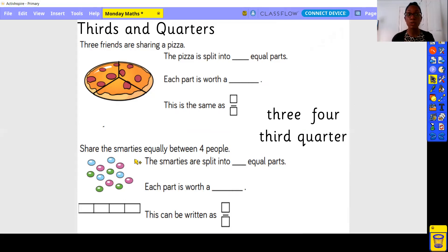Share the smarties equally between four people. The smarties are split into equal parts. Each part is worth them. This can be written as, I think you get the gist. There are some spellings there if you need them. Do give that activity a go. I'll just move on to the challenges so you can see what's coming, and then you can decide how you make it work for you.